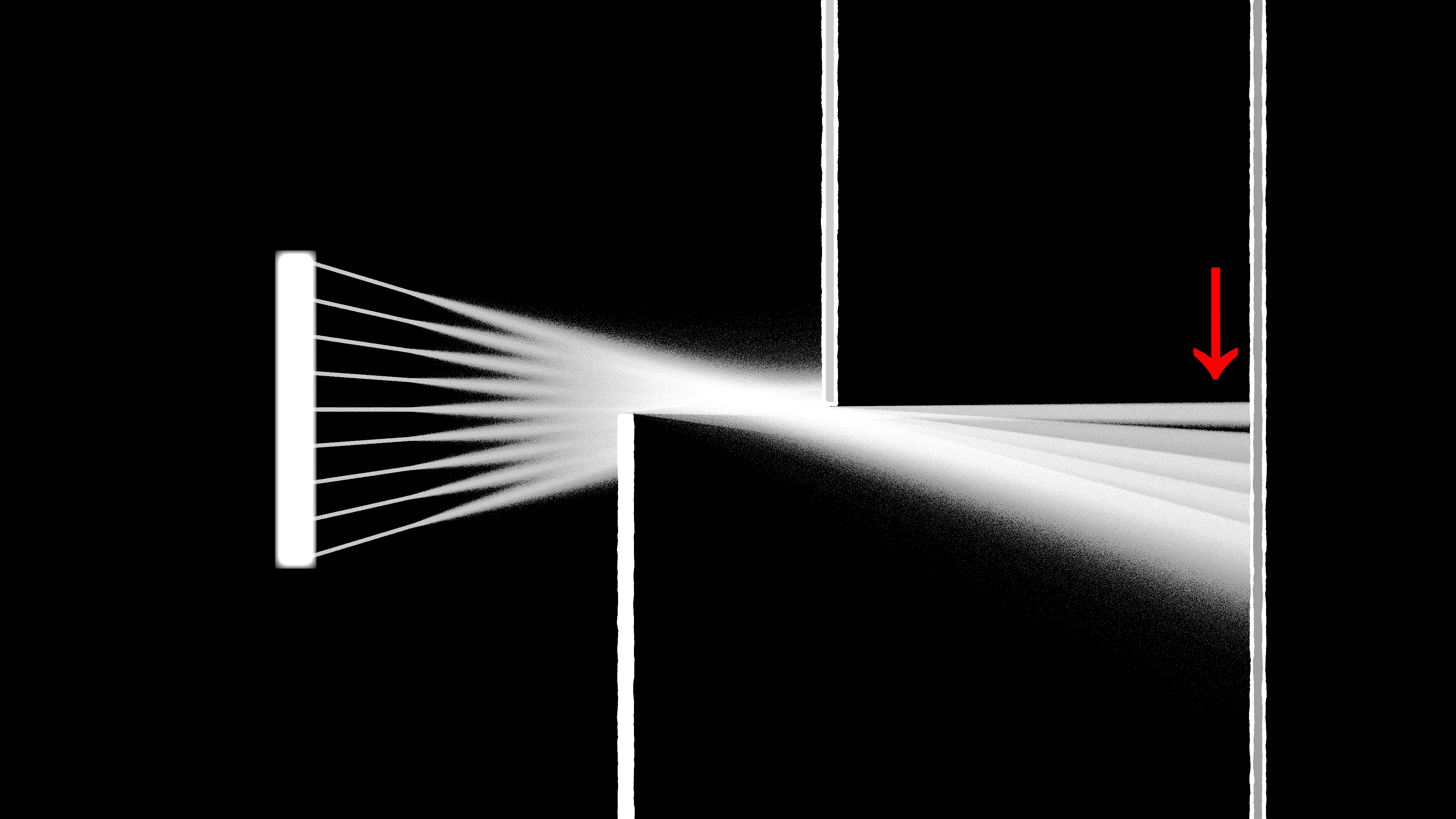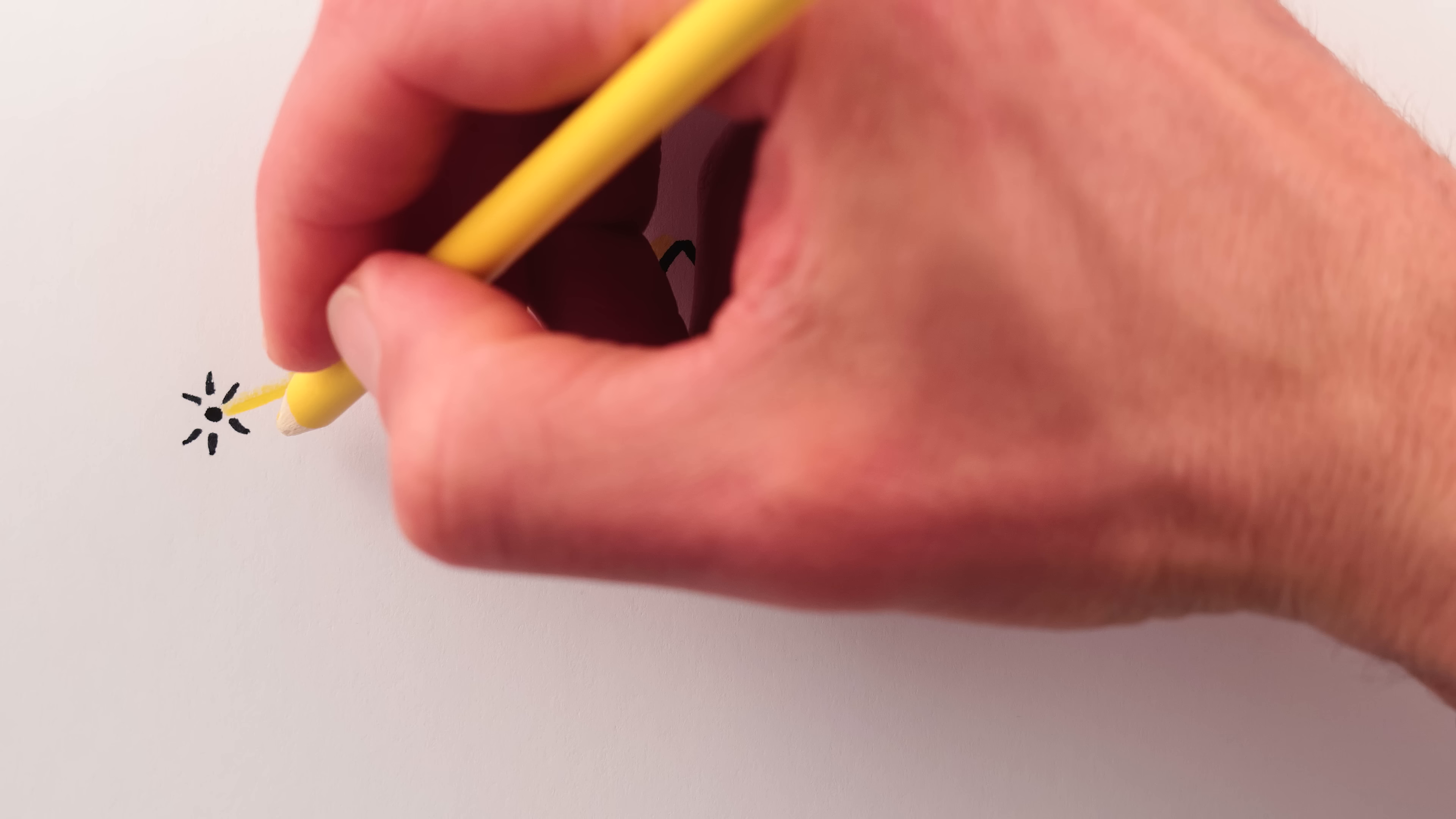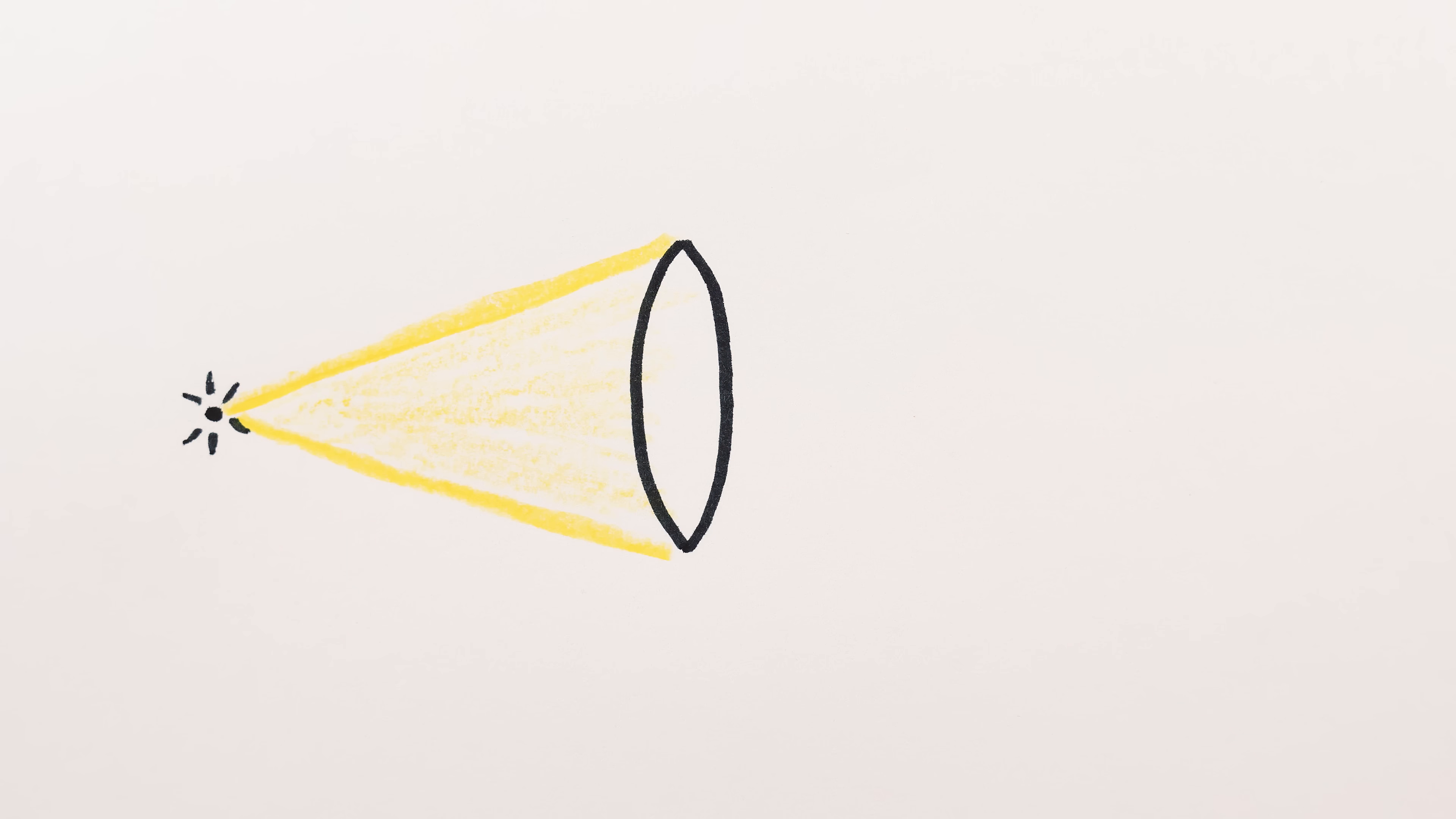This is the blister on the opposite shadow. Essentially, the same blistering happens with a camera or your eye, except that the effect is due to the size of the lens opening rather than the size of the light source.